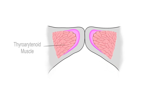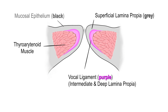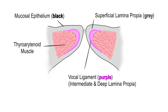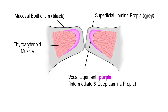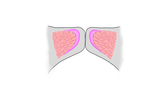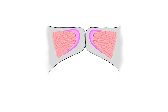If we take a closer look, the vocal fold is actually comprised of five layers: mucosa, superficial lamina propria in gray, the vocal ligament in purple, which is comprised of the intermediate and deep lamina propria, and finally muscle. The vocal fold mucosal epithelium, due to its pliability, oscillates independently of the deeper layers due to the superficial lamina propria, which is a loose gel-like structure.